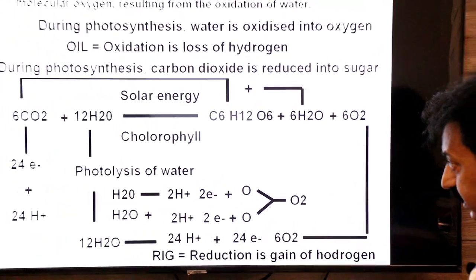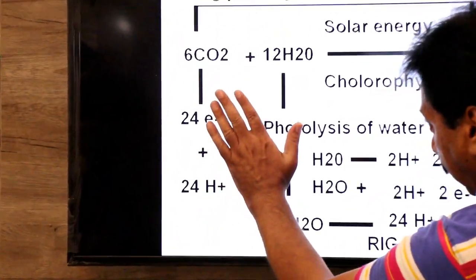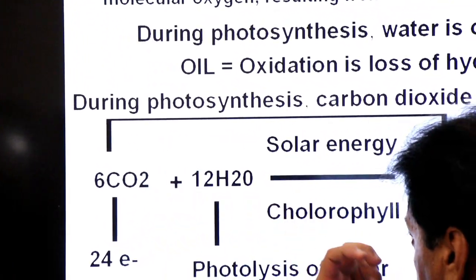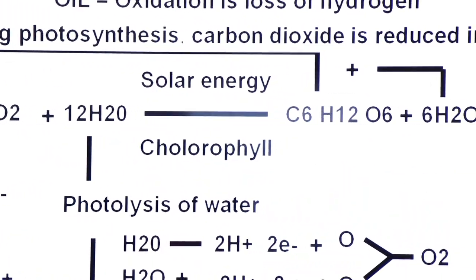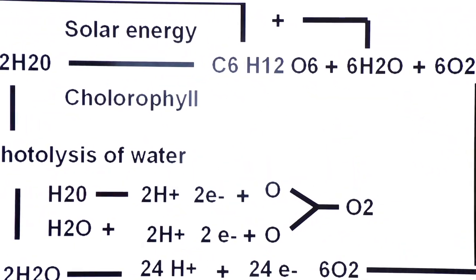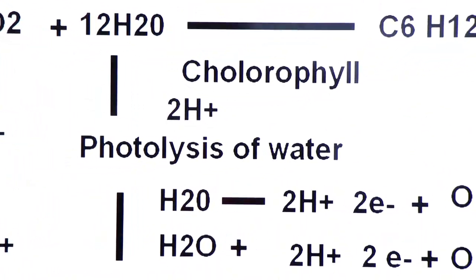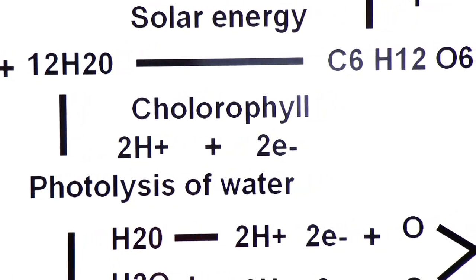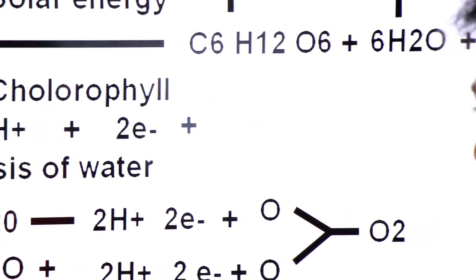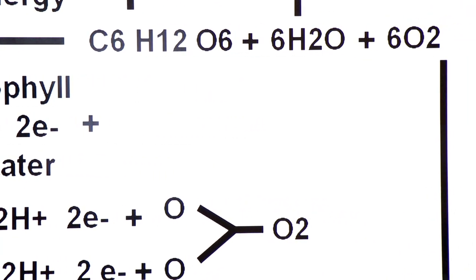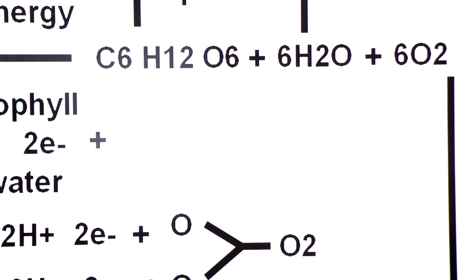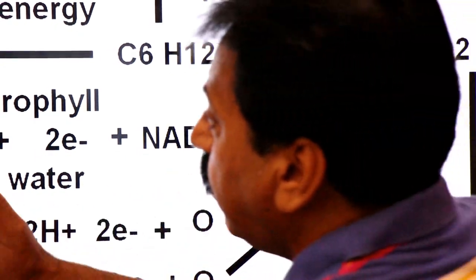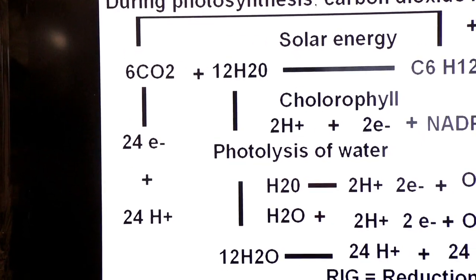The protons and electrons are carried toward carbon dioxide by a carrier molecule called NADP⁺. The protons and electrons obtained from photolysis of water are first picked up by NADP⁺, which is then reduced to NADPH. The NADPH then donates these protons and electrons to carbon dioxide.